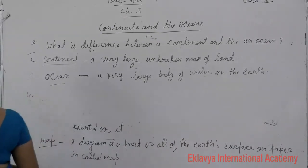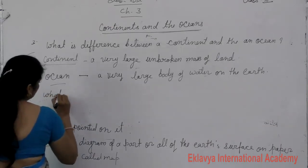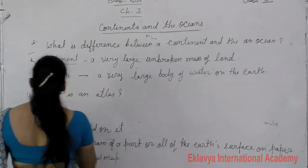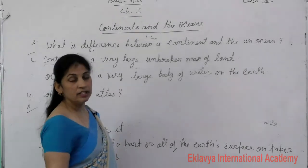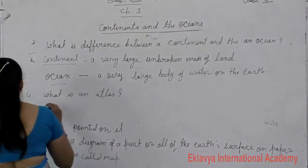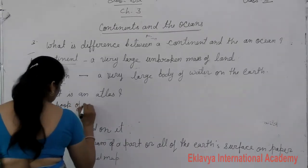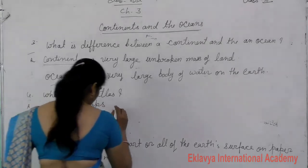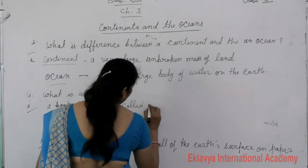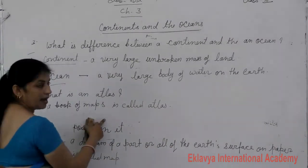Next question is: what is an atlas? I hope all students understand this question. An atlas is a book of maps. A book of maps is called an atlas.